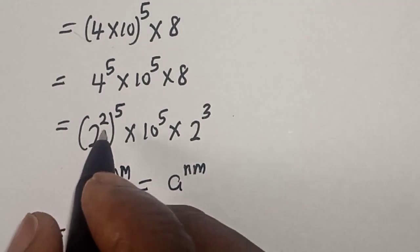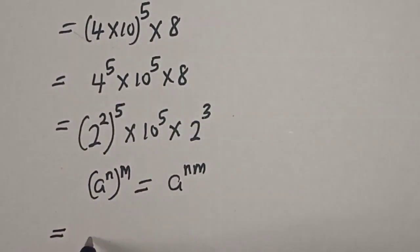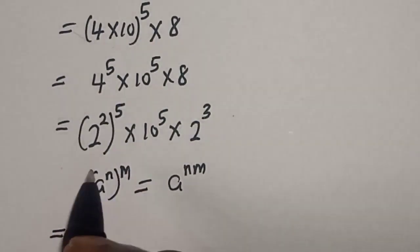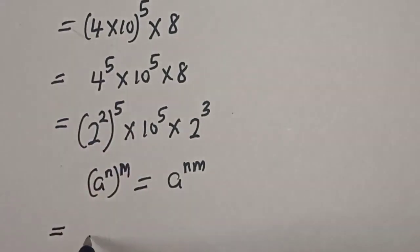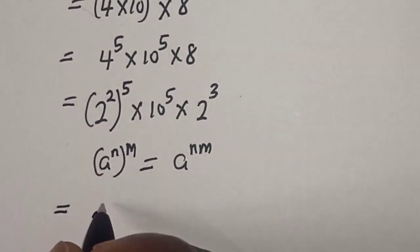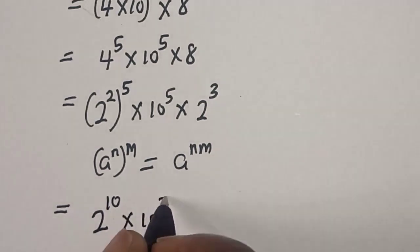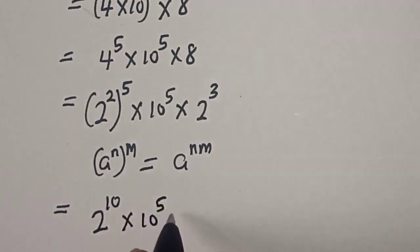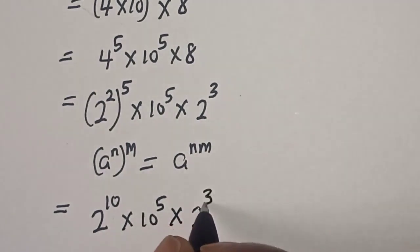We have 2 raised to the power 10, multiplied by 10 raised to the power 5, multiplied by 2 raised to the power 3.